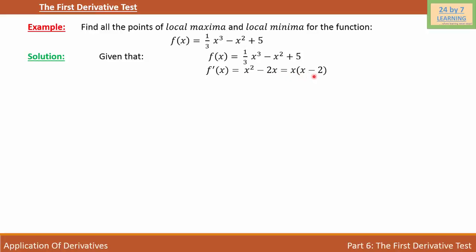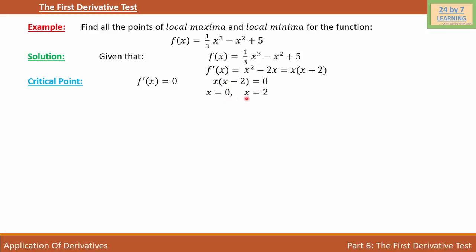Let's find the critical points. In order to do that, I need to set f'(x) = 0. As you can see, f'(x) is x times (x - 2), so x times (x - 2) = 0, and if I simplify, I will get x = 0 and x = 2.